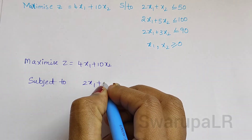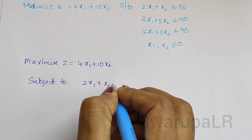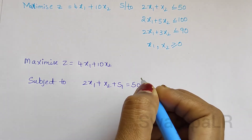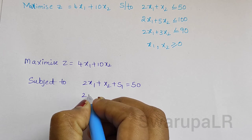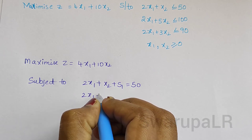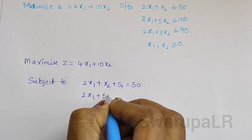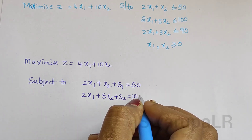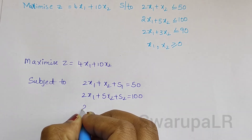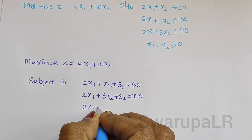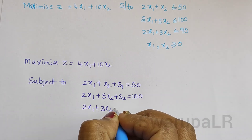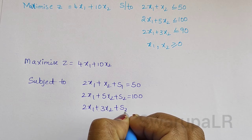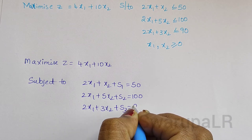2x1 plus x2 plus s1 equals to 50. 2x1 plus 5x2 plus s2 equals to 100. 2x1 plus 3x2 plus s3 equals to 90.